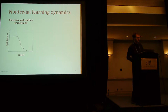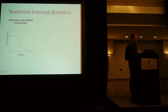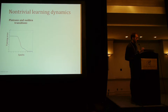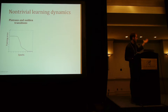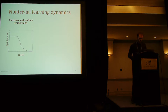Just to show that they can do some interesting things: this is a linear deep network learning on MNIST, and you can see it shows phenomena that we sometimes see in non-linear networks. In particular, it sits there for a while doing nothing before the training error starts to drop down, and there are some other little bumps along the way.